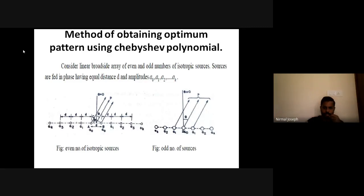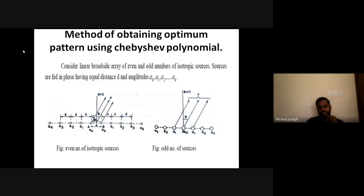Now we know how to arrange arrays with odd and even numbers of elements. We are going to find the field strength at a distant point P. The middle point of the array is taken as the reference point, and phase differences are calculated accordingly — similar to how we calculated for an array of N isotropic elements. We calculate the total field strength at a distant point P.